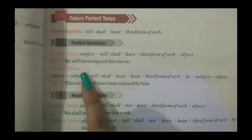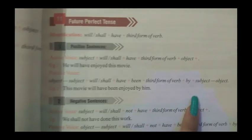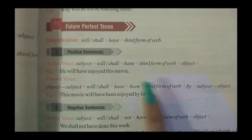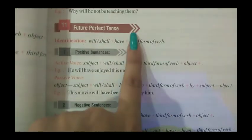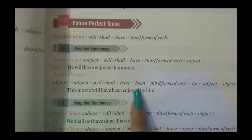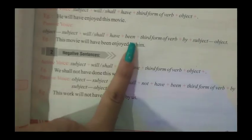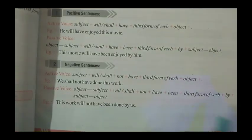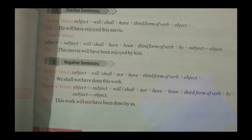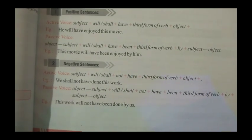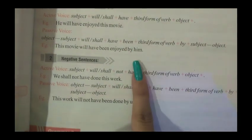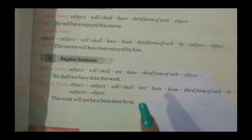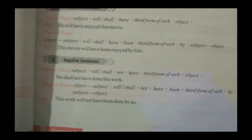In passive voice, we use 'being' and 'by' in every rule, and in this tense we will use future perfect tense rules accordingly. In a negative sentence, everything remains the same — we will simply add 'not'. In active voice we add 'not', and in passive voice we also add 'not'.